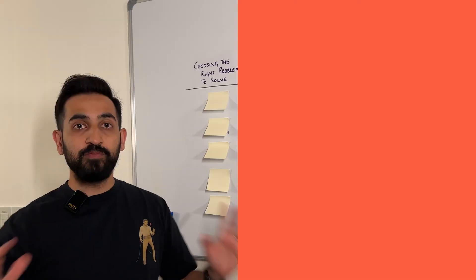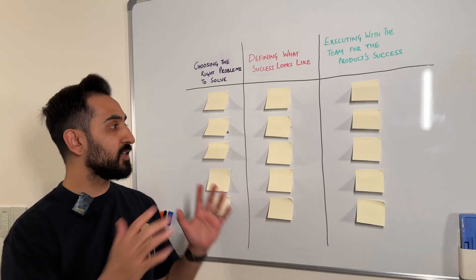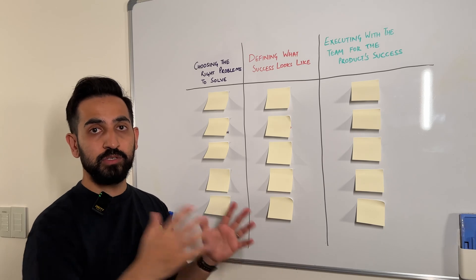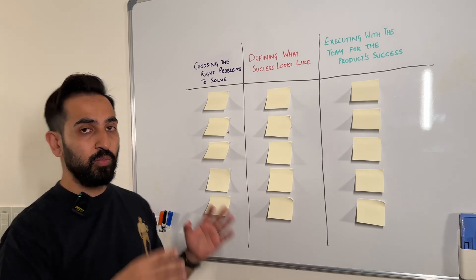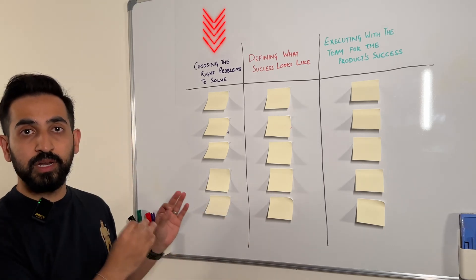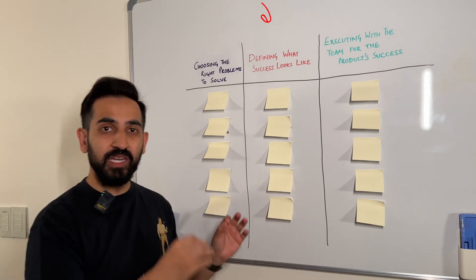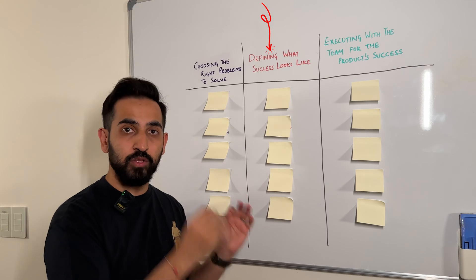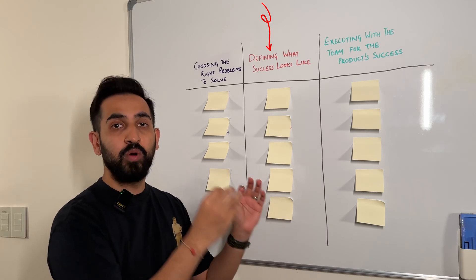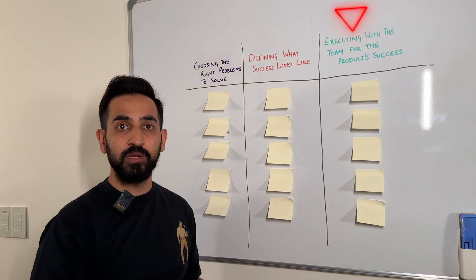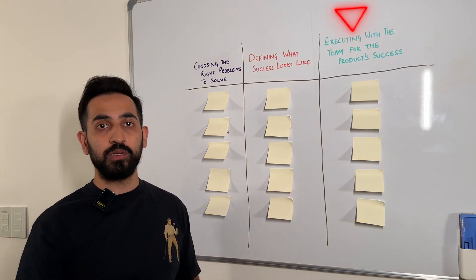I've broken down the terms into the three parts of a product manager's role, which are choosing the right problems to solve, defining what success looks like, and working and executing with the team for the product success.